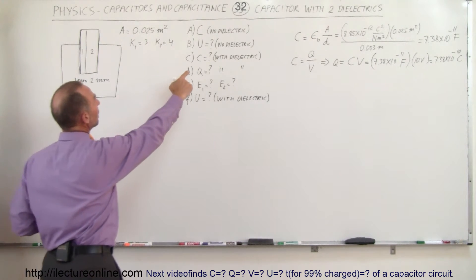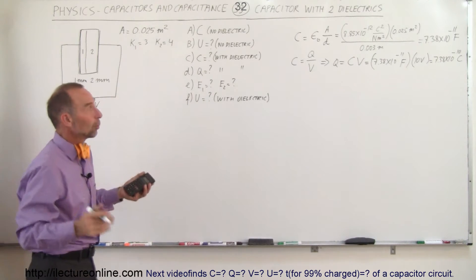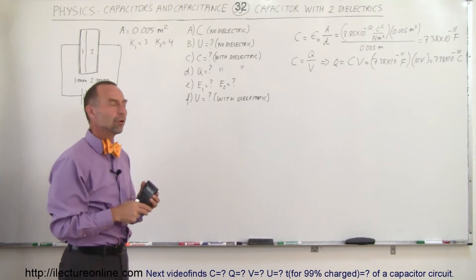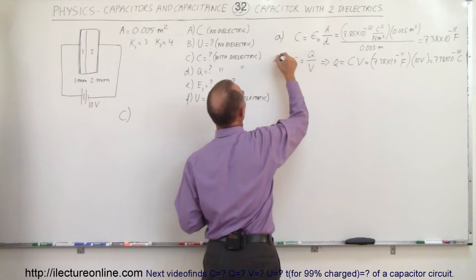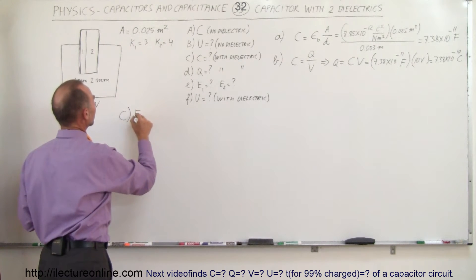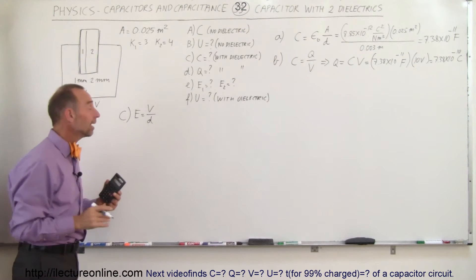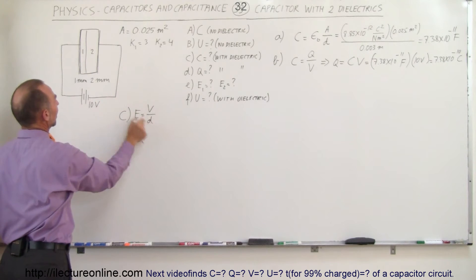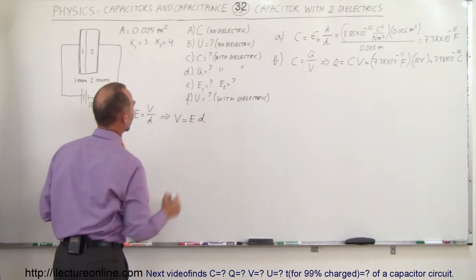Now we want to find the capacitance with the dielectric — that's a bit more complicated because we have two dielectrics. With only one dielectric, we'd simply add the dielectric constant, but with two it's not as straightforward. Working on part C, we realize that the electric field equals voltage divided by distance, so the voltage across a dielectric equals the electric field times the thickness d.